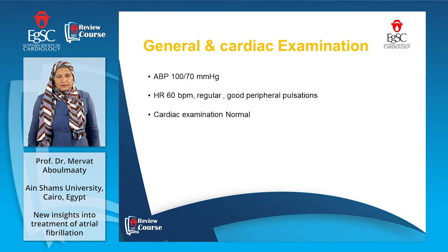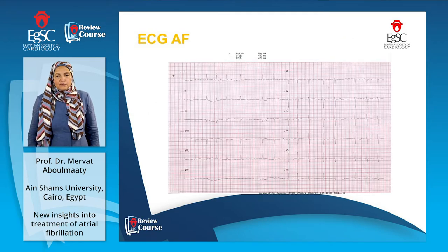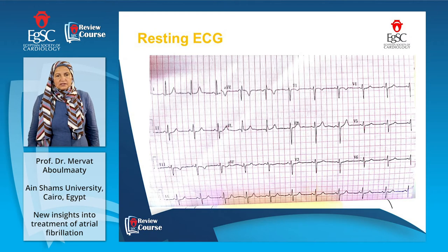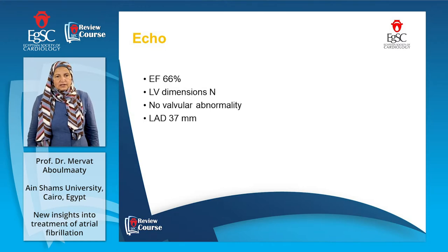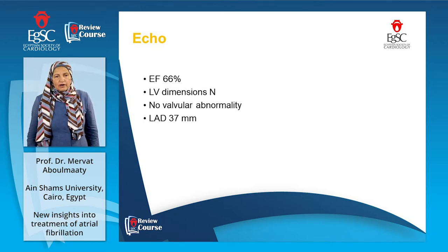His blood pressure was normal, heart rate sinus 60, normal ECG, and normal cardiac examination. This is his ECG with atrial fibrillation with a full list of medication to control it and to revert him to sinus rhythm. And this is his 12-lead ECG of sinus rhythm, normal ECG. His echocardiography is normal, ejection fraction 66%, normal left atrial dimension 37 mm, no valvular abnormalities, and normal left ventricular functions.